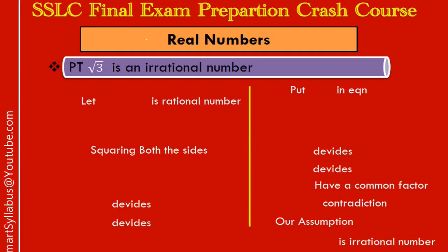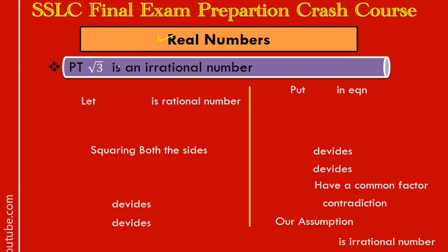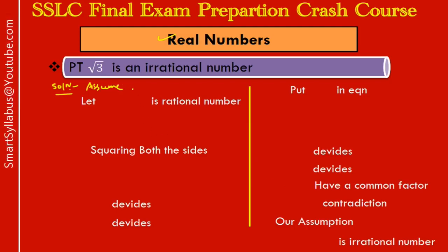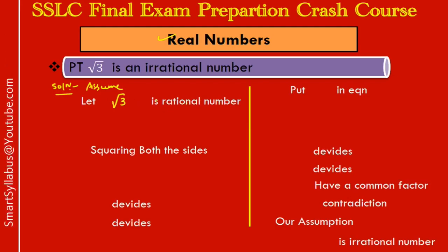The first sum: prove that root 3 is an irrational number. Solution — the method is proof by contradiction. Even in the binomial type, the first step was assumption. So let us assume the given number is a rational number. By writing a few steps, at the end you will come to know that no, it's not rational — it's irrational. First step: let root 3 be a rational number.